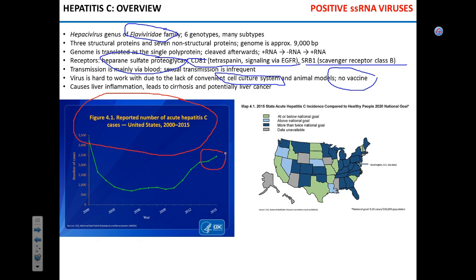The virus replicates slowly and causes liver inflammation — initially low grade, then increasing. Chronic inflammation of the liver leads to cirrhosis, which involves fibrotic changes where proper liver tissue is replaced with connective tissue. Moreover, chronic inflammation in many cases is associated with cancer. The association between liver sarcoma and hepatitis C infection is pretty well established.